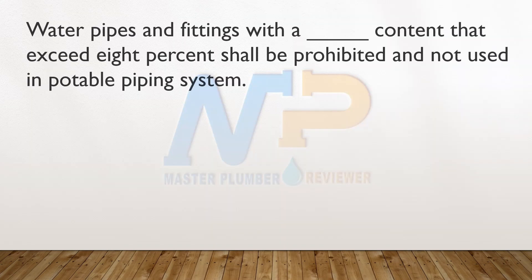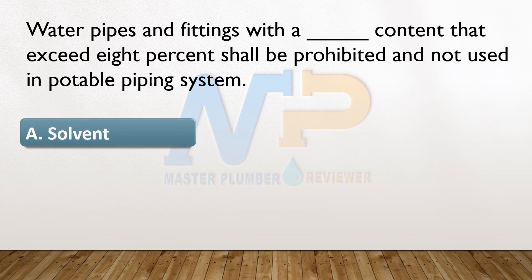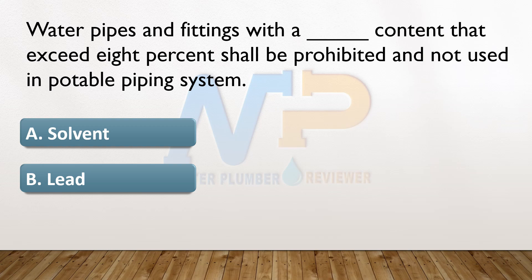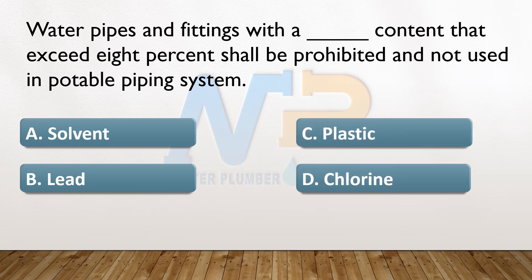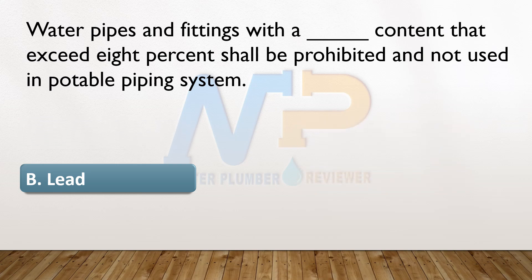Water pipes and fittings with a blank content that exceeds 8% shall be prohibited and not used in a potable piping system. A. Solvent. B. Lead. C. Plastic. D. Chlorine. The answer: B. Lead.